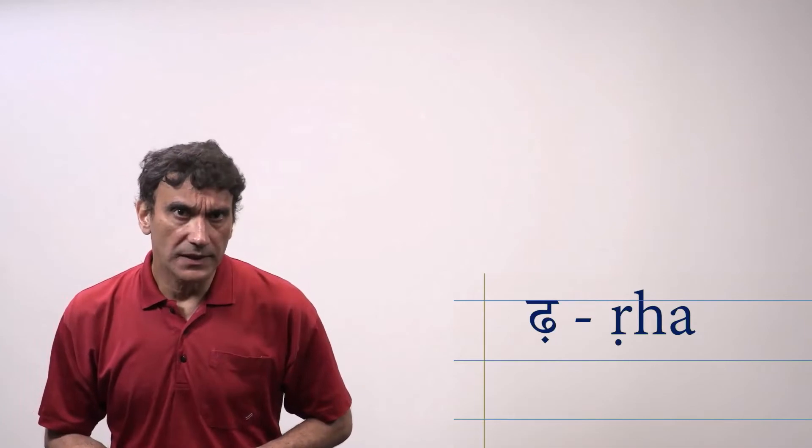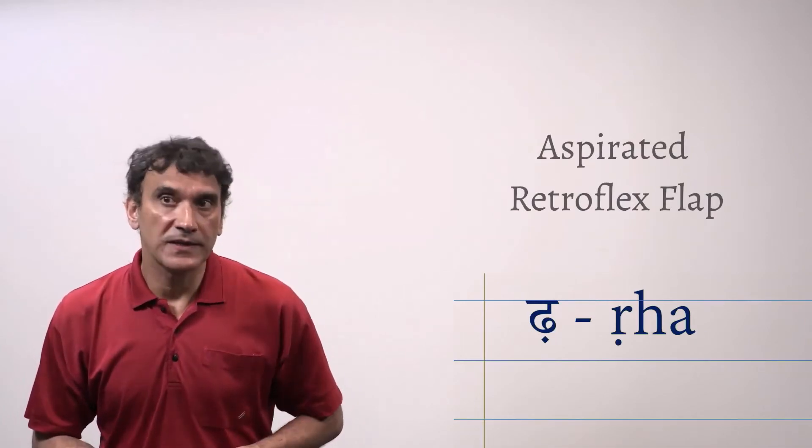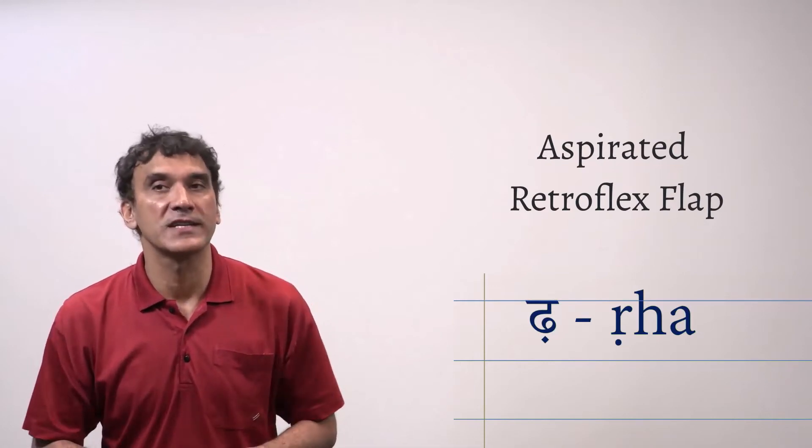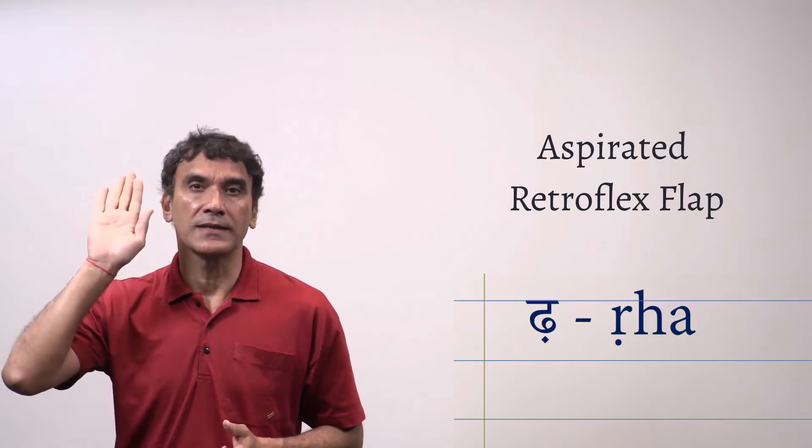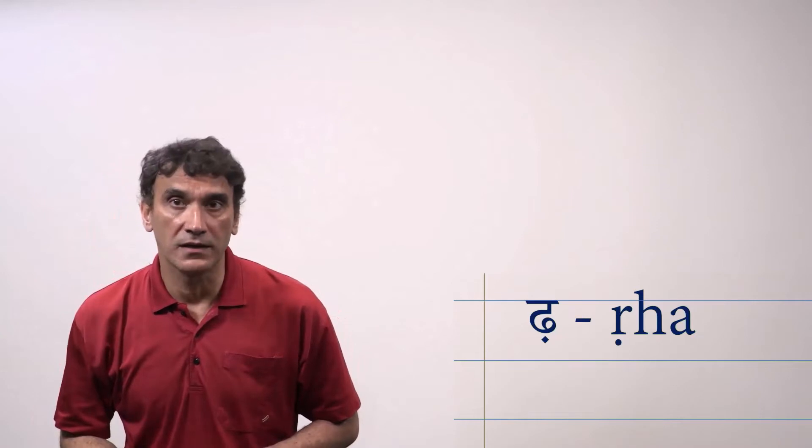The second one is Rh. It is the aspirated counterpart of R. Just like the previous one, Rh is also retroflex flap but this time along with the aspiration. The tongue curls back, touches the hard palate and with a puff of air it falls and makes the sound Rh, Rh.